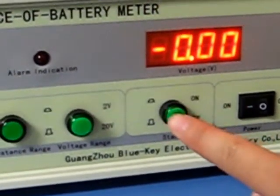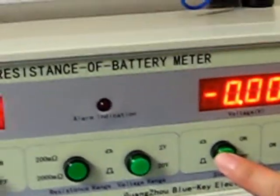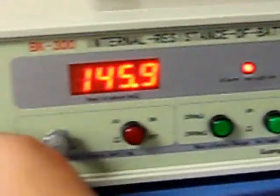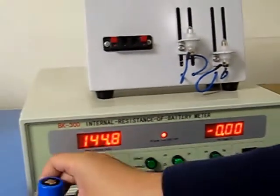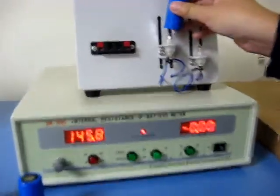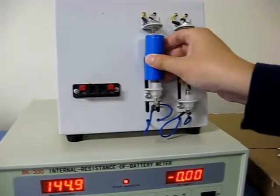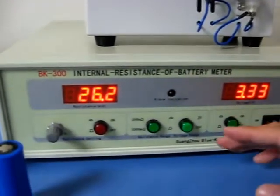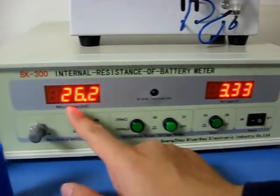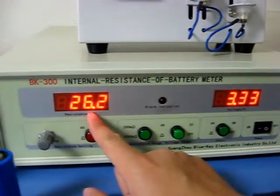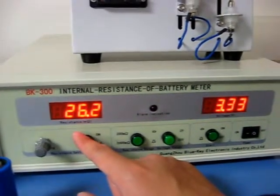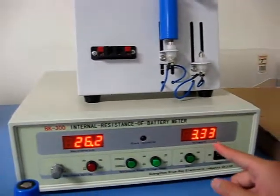You can depress this button and hit the start on-off button here. As soon as I press this down, you're going to have the alarm sound off, which is normal. So we're going to do that. You put a battery into the machine here, and as soon as I do that, the alarm stops, and this shows here 26.2, which is the actual internal resistance of this particular battery at 3.33 volts.